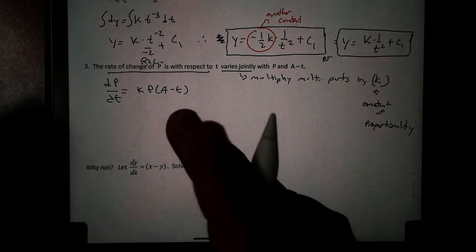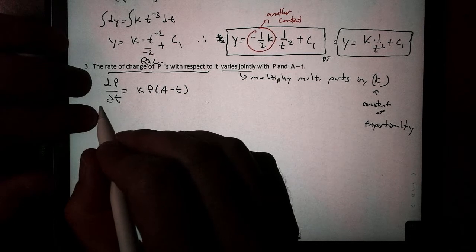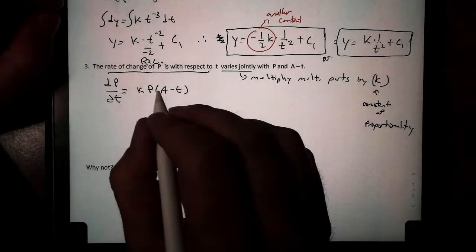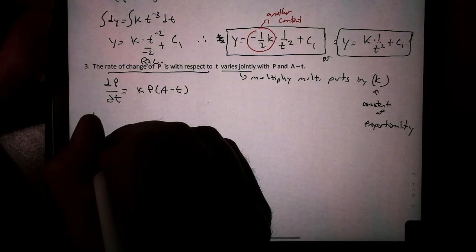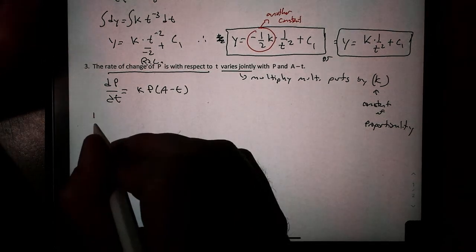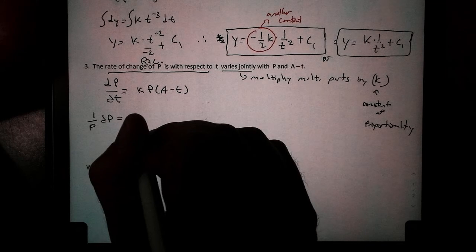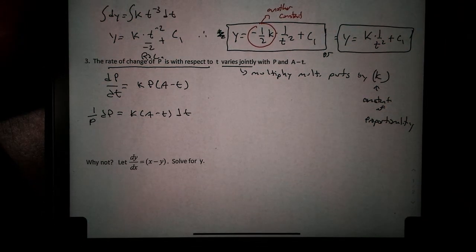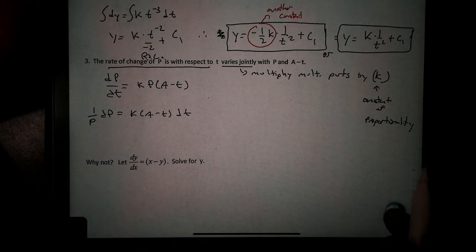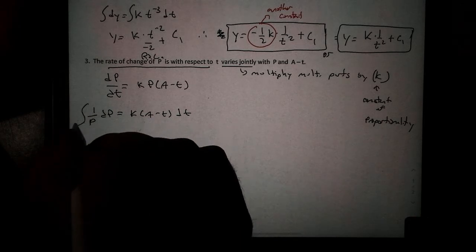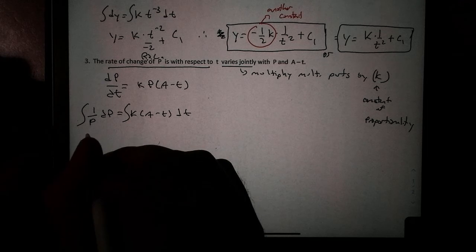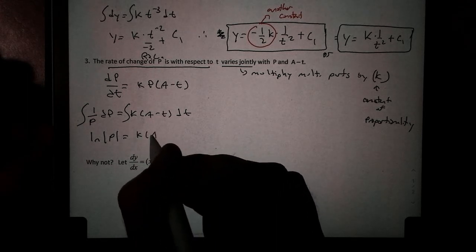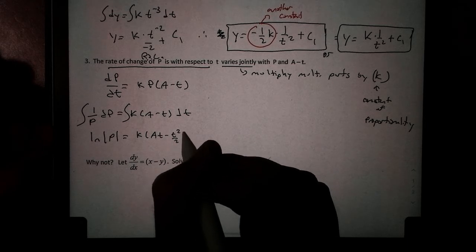Now, at this point, we want to separate our variables. I want anything that has a T, bring it over to the left side. Anything with a P, bring it over to the right side. K always stays on the right. We never mess with the constant. So what I have to do is I have to divide by P. One over P dP equals K times A minus T dT. And now I'm going to, of course, solve this by integrating. Now, you might recall, this becomes natural log, the natural log of P, equals—when we integrate here, K is a constant, so I'm just going to leave it alone. And that gives me AT minus T squared over 2 plus C1.